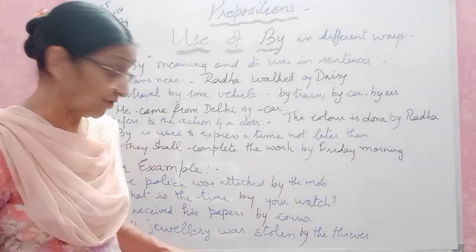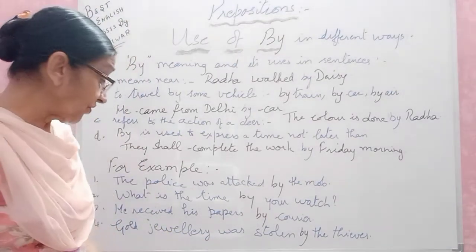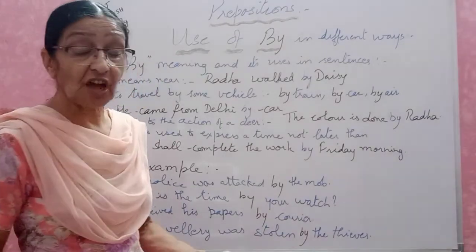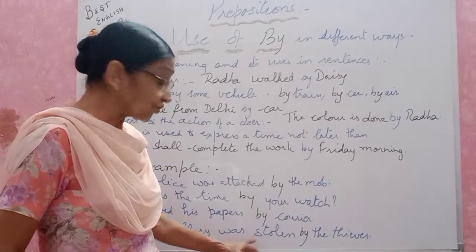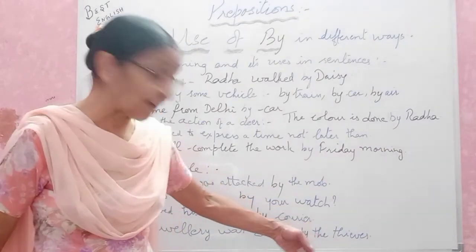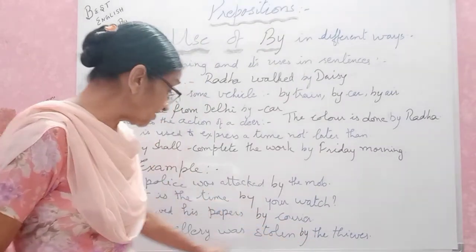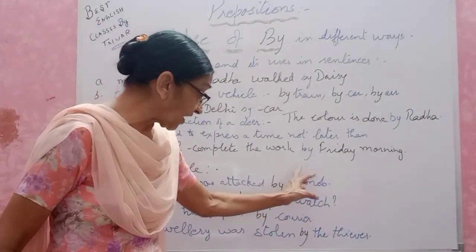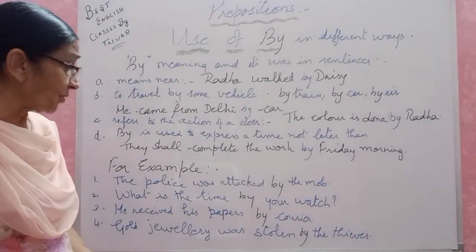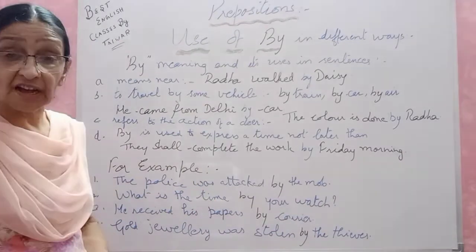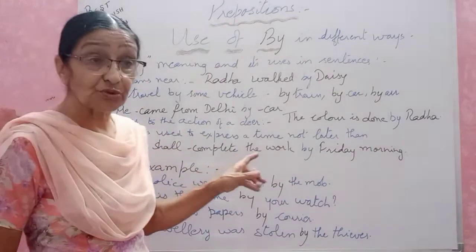Last example: 'Her jewellery was stolen by the thieves.' The jewellery is at home or in the shop, but who has done the work — who stole it? The thieves. By whom was the work done? By the thieves. So we put 'by' there. These are the example sentences showing where to use 'by.'